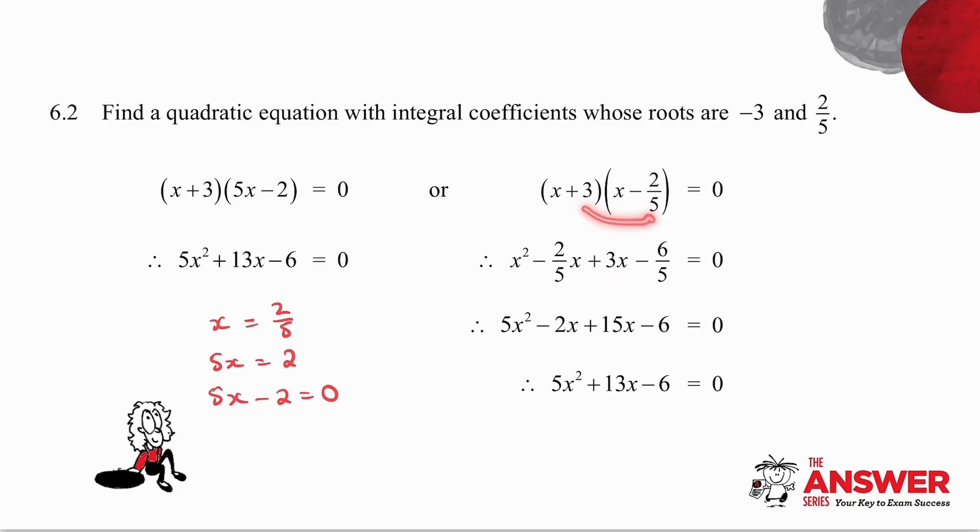So multiply each term together. You've now got an equation with fractions. So multiply by your common denominator, which is five, and you get that. Collect together the two terms in x and you get exactly the same quadratic equation. So it doesn't matter which way you do it. Both of them will give you the same answer where you're having a quadratic equation with integral coefficients.